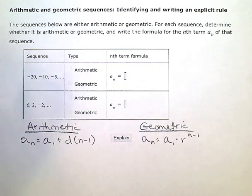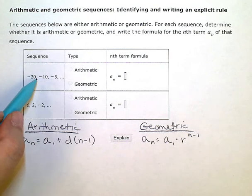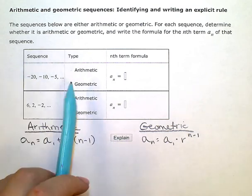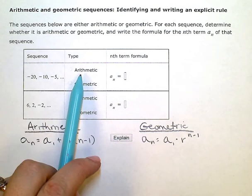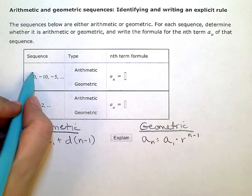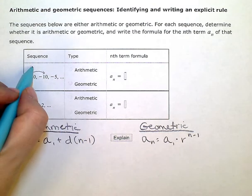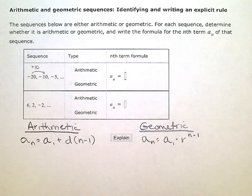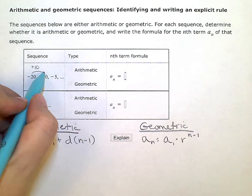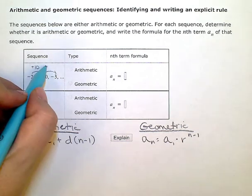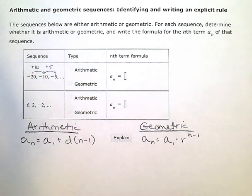If I'm looking at this first one here, negative 20, negative 10, negative 5. If it's arithmetic, I will be adding or subtracting the same thing every time. To get from negative 20 to negative 10, I would add 10. To get from negative 10 to negative 5, I would add 5. Since I'm not adding the same thing every time—once I add 10, the next time I add 5—this one is not arithmetic.